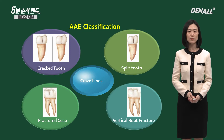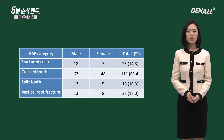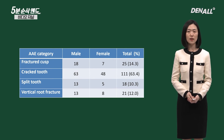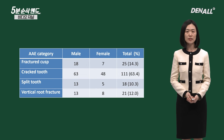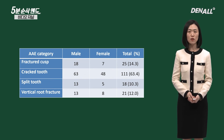The ratio of cracked tooth was the highest in this study. AAE included complete fracture because incomplete fracture leads to complete fracture.